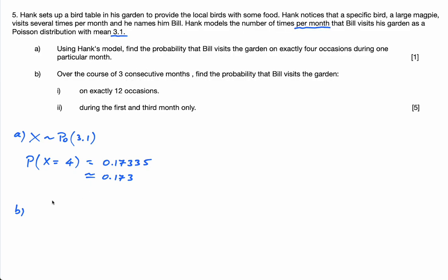So three consecutive months. I'm going to do a new distribution now. If the mean for one month is 3.1, the mean for three months is 9.3. It's just three times that.